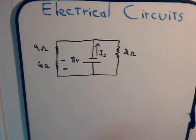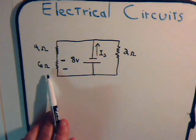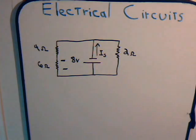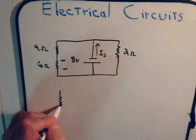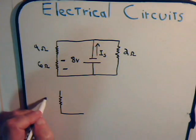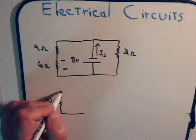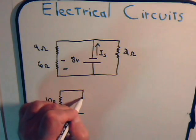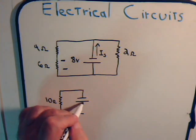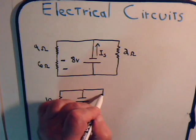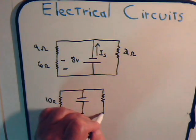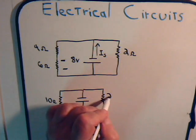So clearly this 6-ohm resistor is in series with this 4-ohm resistor. So we can draw this simply by replacing it with a 10-ohm resistor. And the battery is here, and this part of that circuit we leave as is.